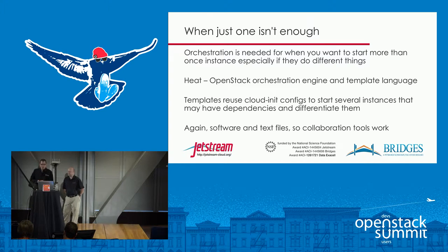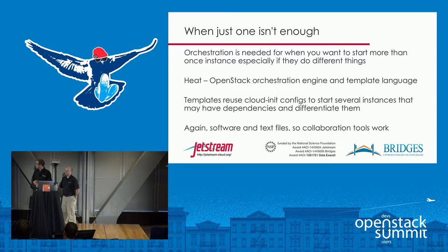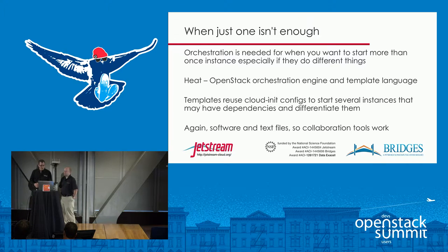Why do we need orchestration? When we have mini clusters or more complicated multi-VM instances, we need something to facilitate starting instances — a template that says this node is a metadata service, these nodes are IO services, these are clients, this needs Torque. We wind up needing things like Heat templates. Murano gives us all of that automatically: when you build the Murano package it has the Heat template inside, sets up differences between instance types, provisions the software. These are all reusable — someone can run the same Murano package and get the same software environment on Bridges as on Jetstream.